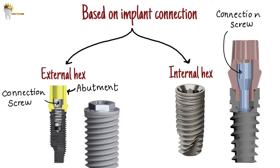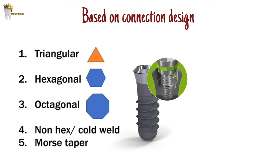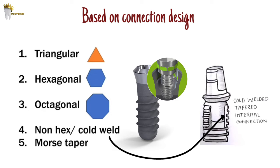Root form implants are also classified on the basis of connection design. The triangular design has three faces, so the abutment can be fixed at any of the three positions. The hexagonal design has six faces, so the abutment can be fixed at any of the six positions. The octagonal design has eight faces, allowing the abutment to be fixed at any of the eight positions. There is also a smooth surface, tube-in-tube connection called the smooth surface or non-hex design, or cold weld design.